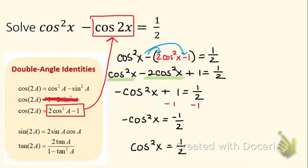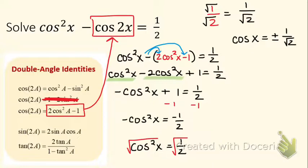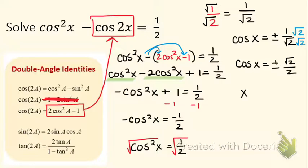Now we need to get rid of the square, so take the square root. That gives cosine x equals plus and minus the square root of 1/2. The square root of 1/2 is 1 over root 2 — the square root of 1 is 1, and 2 is not a perfect square. Rationalize by multiplying, giving cosine x equals plus and minus root 2 over 2. So x equals the inverse cosine of plus and minus root 2 over 2.